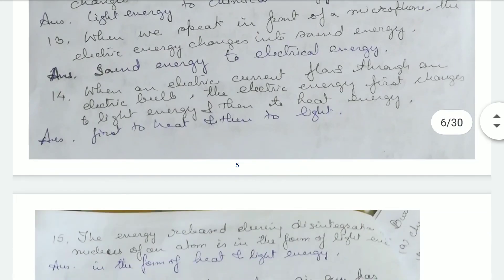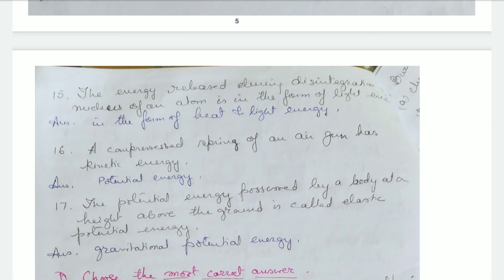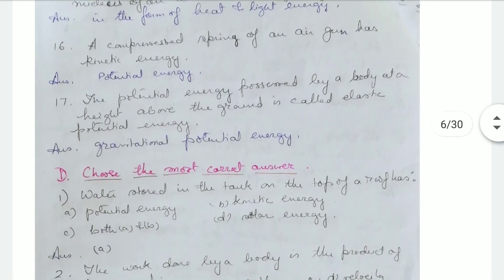When an electric current flows through an electric bulb, electrical energy first changes to light and then to heat — correction: it first changes to heat and then to light. The energy released during disintegration of a nucleus is in the form of light — correction: it is in the form of heat and light. A compressed spring of an air gun has kinetic energy — correction: it has potential energy. The potential energy of a body at a height is called elastic potential energy — correction: it is gravitational potential energy, not elastic.